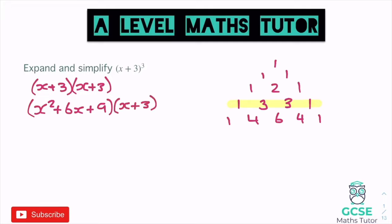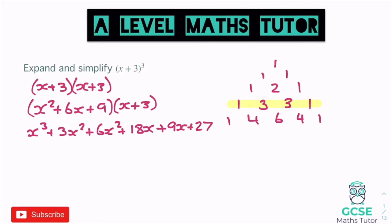Expanding out fully: x² × x gives x³; x² × 3 gives 3x²; 6x × x gives 6x²; 6x × 3 gives 18x; 9 × x gives 9x; and 9 × 3 gives 27. Simplifying, we get x³ + 9x² + 27x + 27. Those four pieces show us the pattern: one x³, three x² terms (giving 9x²), three x terms (giving 27x), and one constant 27.